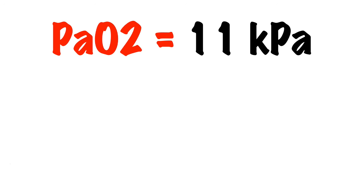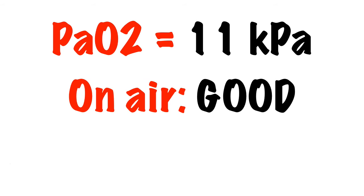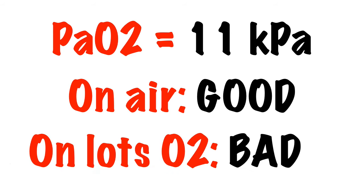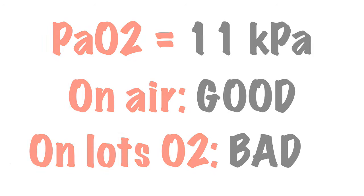If a patient has a partial pressure of oxygen of 11 on air then I'm not concerned. If a patient has a partial pressure of oxygen of 11 on 60% oxygen then I am concerned. Why? Well in neither case is the patient hypoxic, but in the second case it's taking 3 times the amount of oxygen to ensure that the patient isn't hypoxic than in the first, and therefore there's something wrong with their lungs.